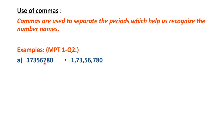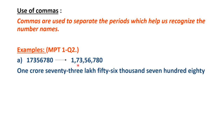Example: 1,73,56,780. Starting from the right hand side: ones period is three places, so after the first three digits (0, 8, 7) we place a comma. Thousands period is two places, so after digits 6 and 5 we place another comma. Lakhs period is two places, so after 3 and 7 another comma. The number is read as one crore 73 lakh 56,780.